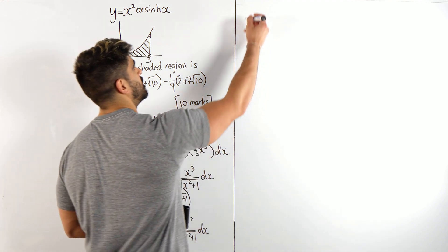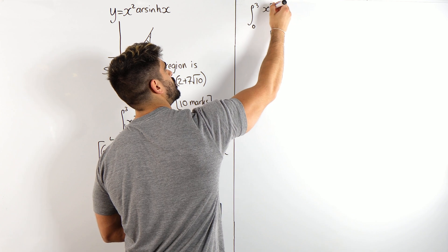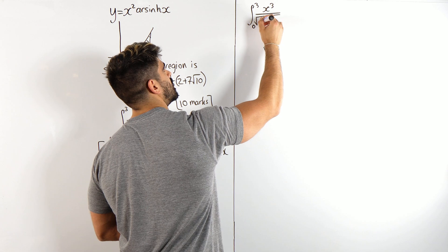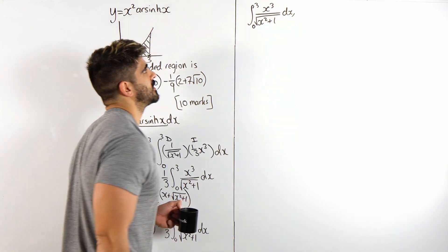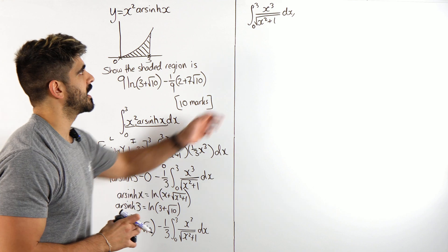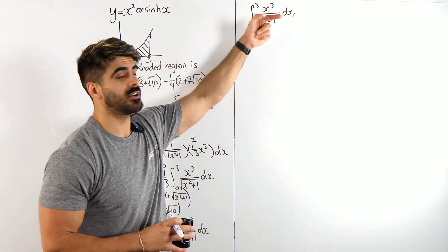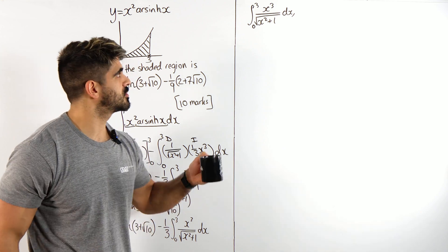Okay. So, let's focus on that. So, we have the integral between 0 and 3 of X cubed over root X squared plus 1. Now, I feel like the only way to do this is by substitution. It would have been nice if we could make a guess. I mean, if that numerator was just X, we would have been able to do that, but unfortunately, we can't. So, what substitution am I going to make?